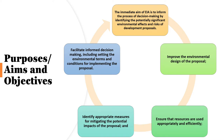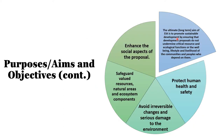The immediate aims of EIA are to inform the process of decision making by identifying potential significant environmental effects and risks of development proposals, improve the environmental design of the proposal, ensure resources are used appropriately and efficiently, identify appropriate measures for mitigating potential impacts, and facilitate informed decision making including setting up of environmental terms and conditions for implementing the proposal.